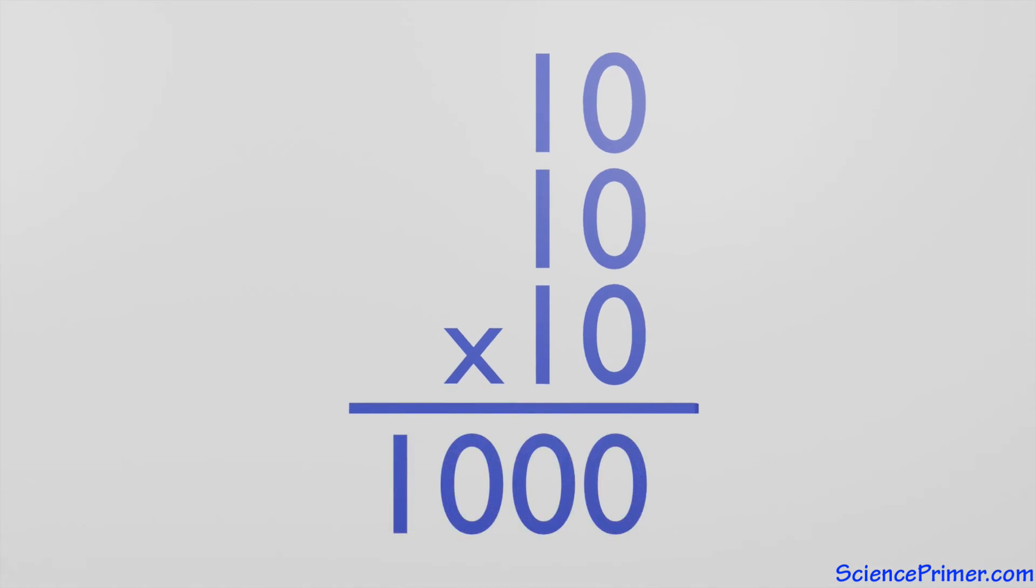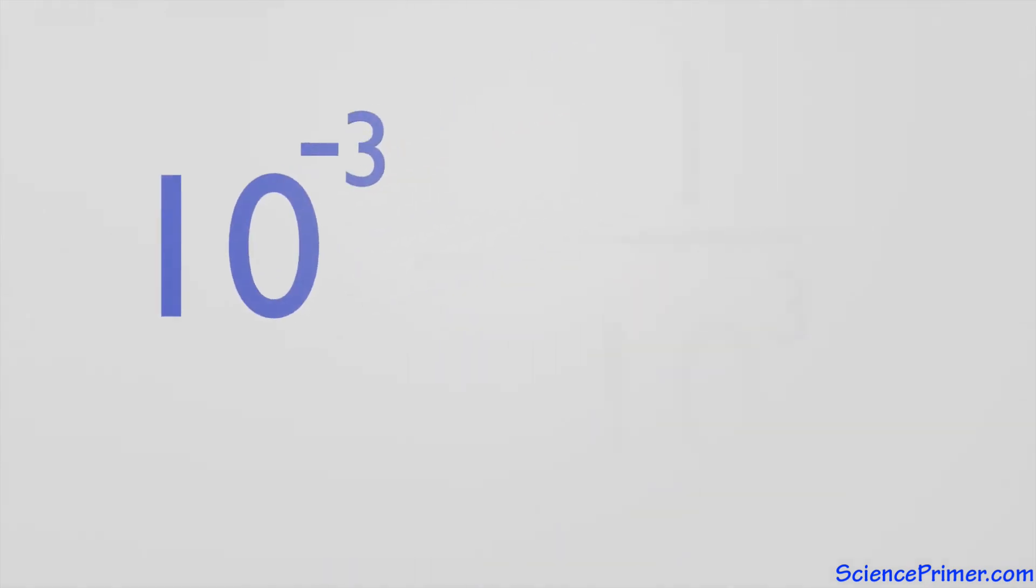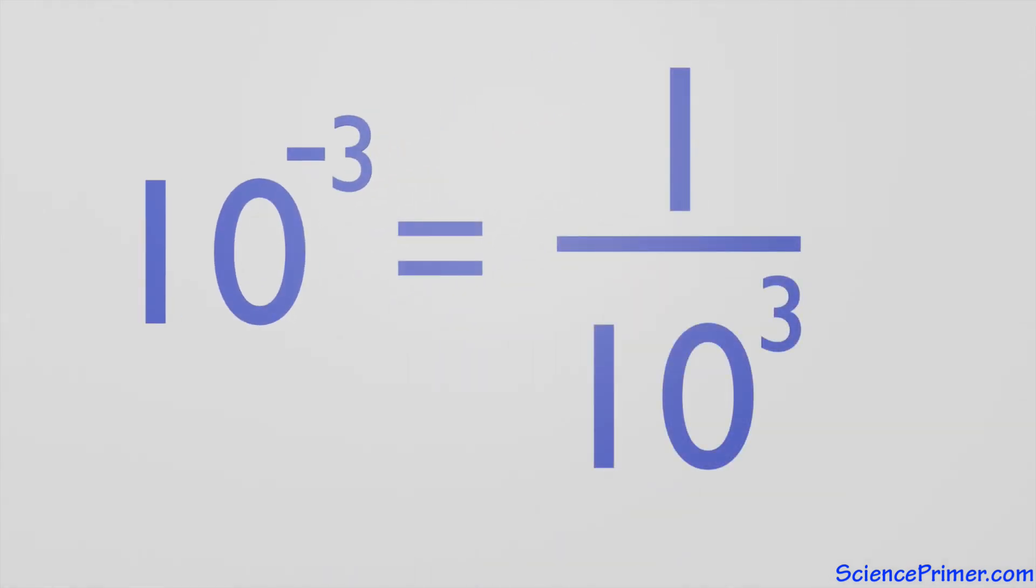Second, according to the negative exponent rule, a number raised to a negative exponent is equal to 1 over the same number raised to the positive exponent, which in this case means that 10 to the negative 3 is equal to 1 over 10 to the 3.